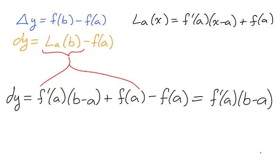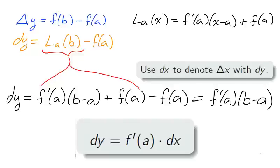Notice that b minus a is the change in x values. We have been denoting this delta x. Therefore, the formula for the differential dy is f'(a) times delta x.